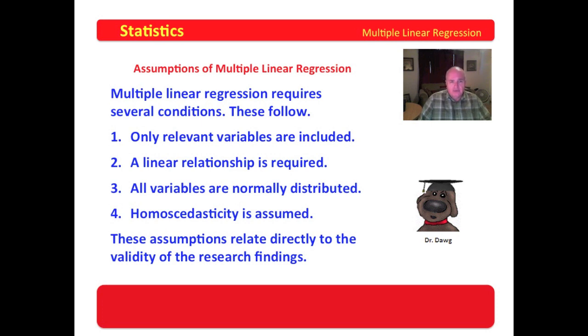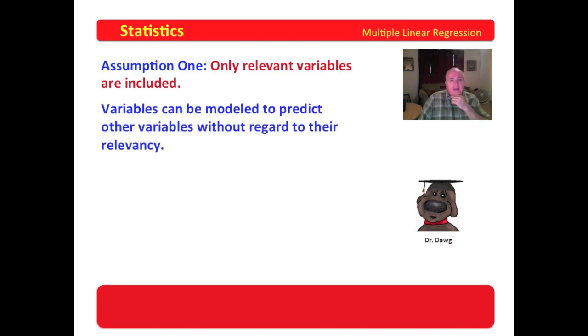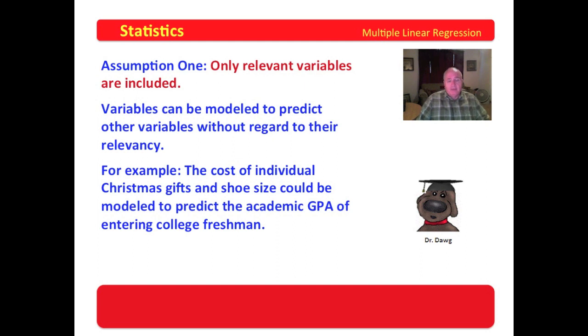Only relevant variables are included. I believe that almost goes without saying. Variables can be modeled to predict other variables without regard to their relevancy. That happens all the time. For example, the cost of individual Christmas gifts and shoe size could be modeled to predict the academic GPA of entering college freshman. What would be the purpose of such research? What would it mean? Christmas gifts and their cost and shoe size? How in the world would they ever relate to GPA?